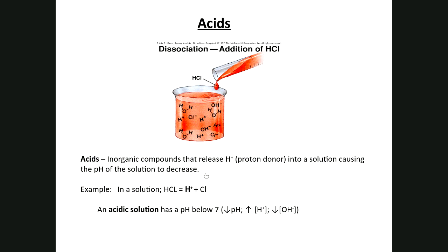Acids are inorganic compounds that release protons into solution, causing pH to decrease. Hydrochloric acid is the best example: HCl is formed by an ionic bond, so when added to a water-based solution it undergoes ionization, releasing protons. That increases proton concentration, exceeding the concentration of hydroxide ions. There is an inverse relationship — as proton concentration increases, pH decreases. Once pH falls below 7, the solution becomes acidic.